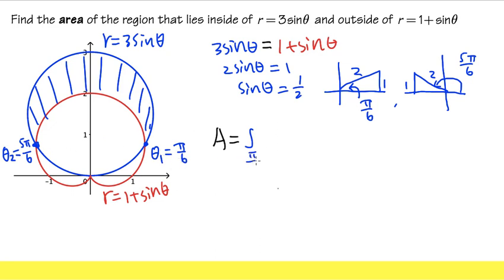We integrate from π/6 to 5π/6. Be sure you have the 1/2 - this is a very common mistake. Then (3sin(θ))² dθ.